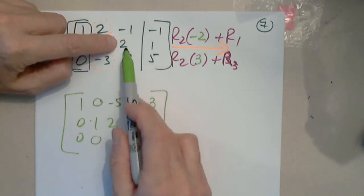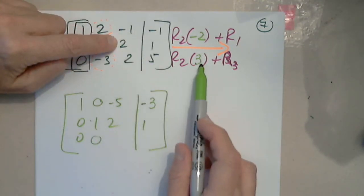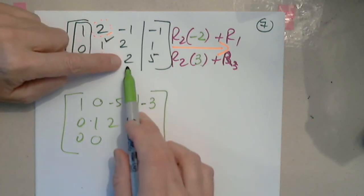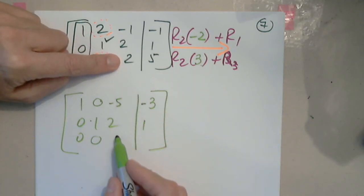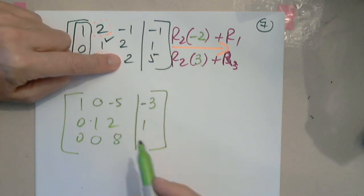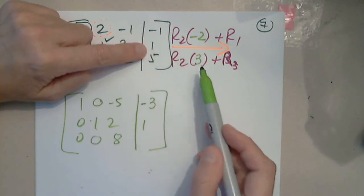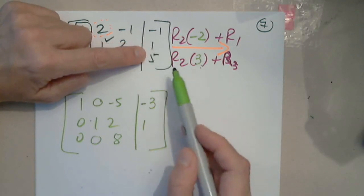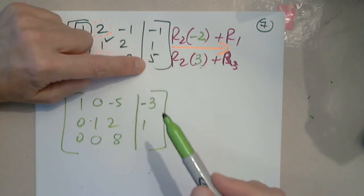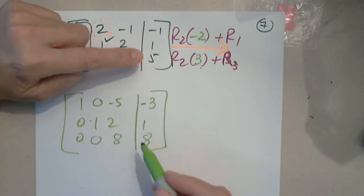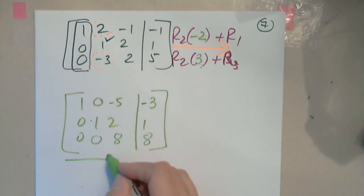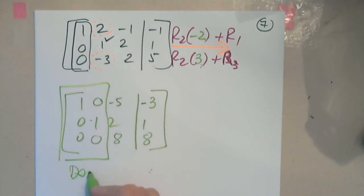2 times 3 plus 2: eight. 1 times 3 plus 5: eight. We are done with this.